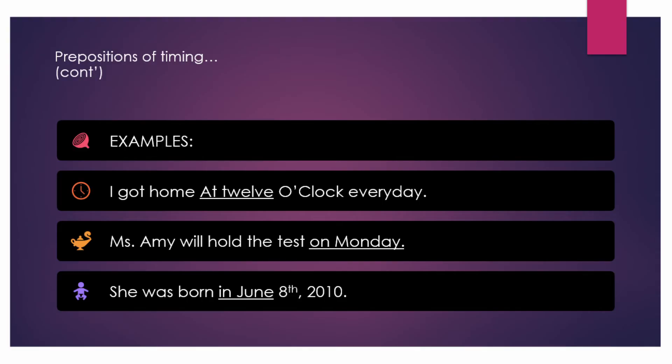Examples of preposition of timing: I got home at 12 o'clock. Every day, Miss Amy will hold the test on Monday. She was born on the 8th of June, 2010. Those are examples of preposition of timing.